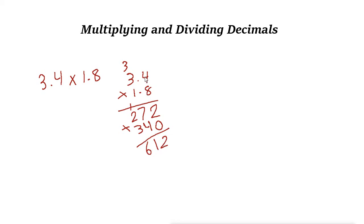Now look at the decimal digits: 3.4 has one decimal digit and 1.8 has one decimal digit, so we have two decimal digits total. Starting from the right, separate two decimal places — so the answer is 6.12.